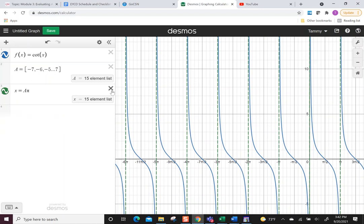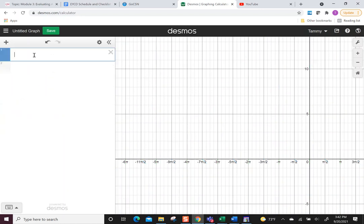All right. So other things, if you wanted to, just because I didn't do a secant, let's just say f of x. Let's do is equal to a, but this time lowercase a, secant, and let's do bx.